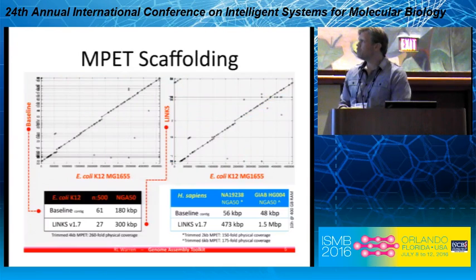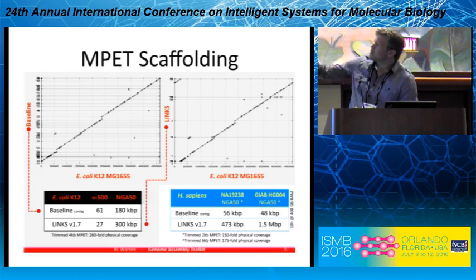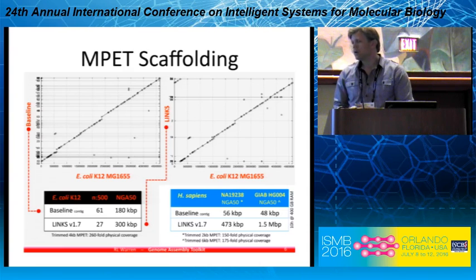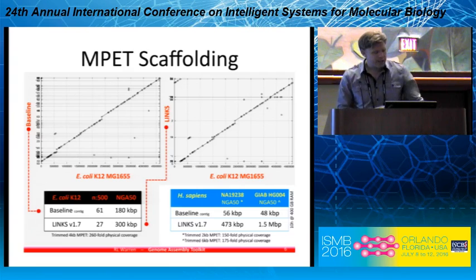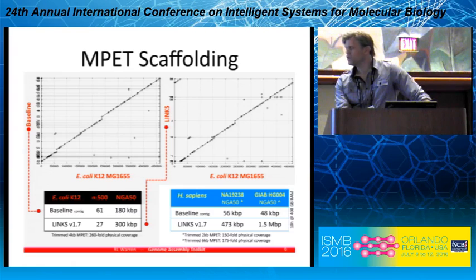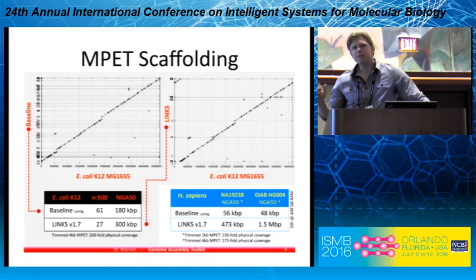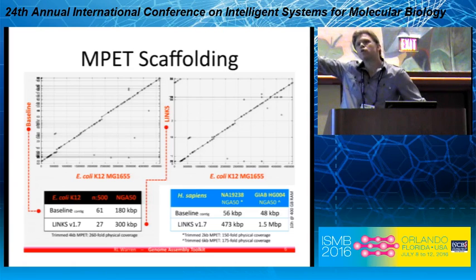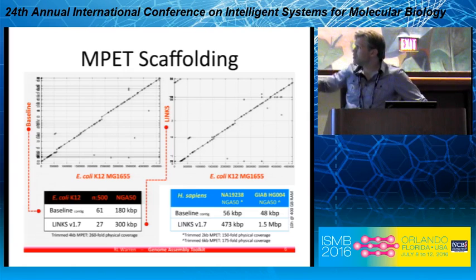Here are results of MPET scaffolding. In gray, it's the scaffolding of E. coli with a baseline. We had a baseline assembly which was relatively contiguous at 180 kilobase pairs. And NGA50, which is a metric that tracks the contiguity of your assembly corrected for genome size and also takes into account assembly errors. With Lynx, the resulting assemblies are half the amount of initial sequences, but there are four large ones that comprise the entire genome — as seen in the dot plot on the right — and the NGA50 climbed up to about 300K.